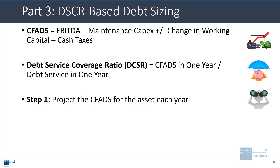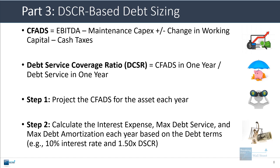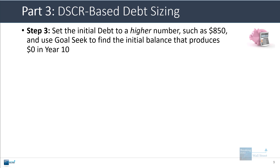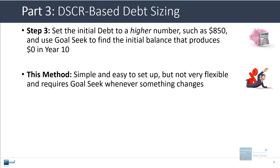What you want to do is project the cash flow available for debt service for the asset in each year, then calculate the interest expense, the max debt service, and the max debt amortization each year based on the debt terms — using the 10% interest rate and the 1.5x DSCR. Then you set the initial debt to some higher number and use Goal Seek to find the initial balance that produces a $0 balance in year 10, assuming a 10-year maturity. This is fairly simple and easy to set up, but it is not that flexible.